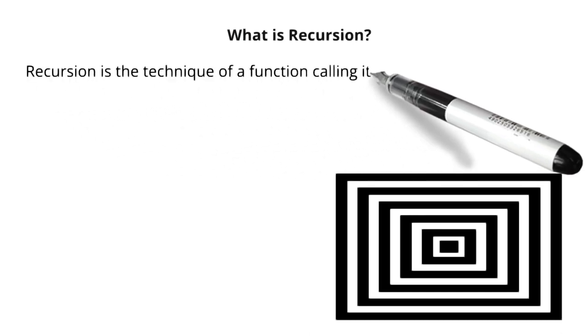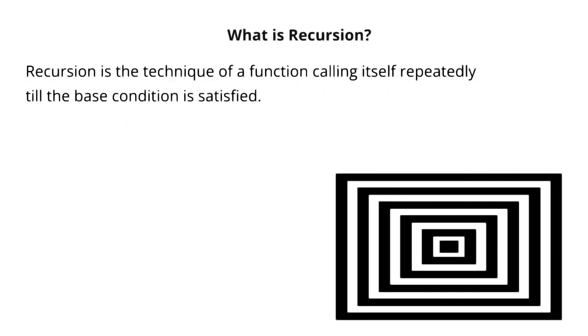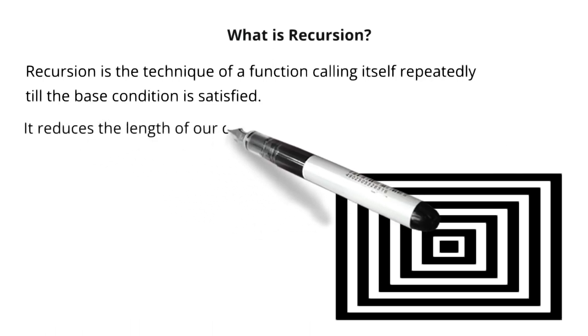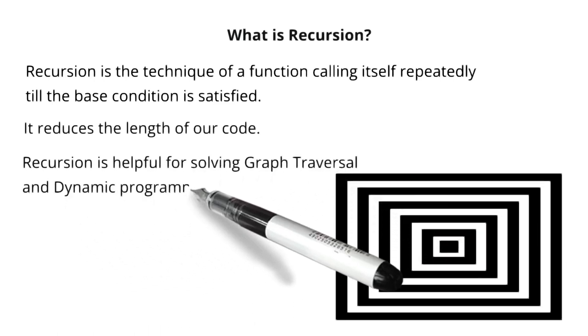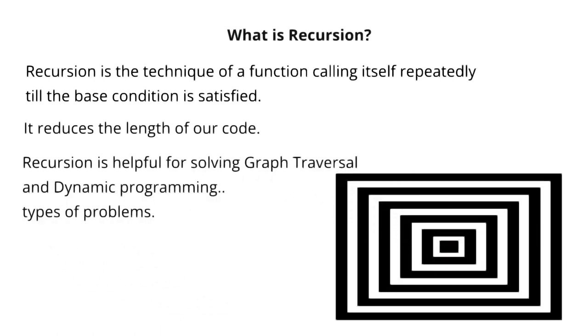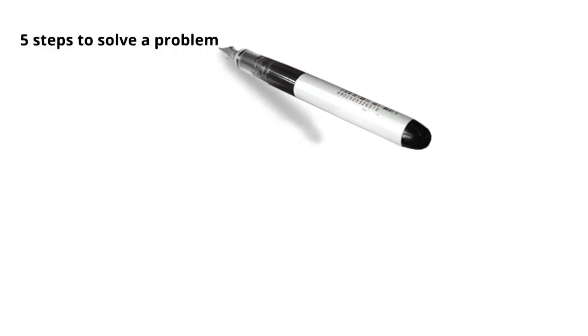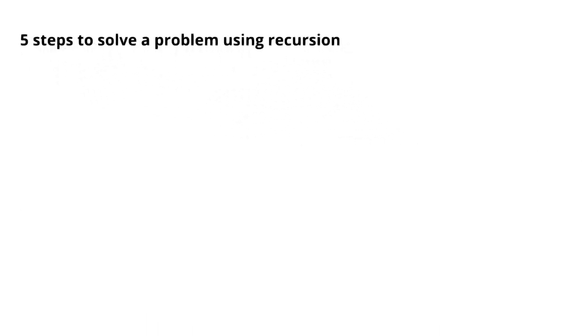Recursion is a technique of a function calling itself repeatedly till the base condition is satisfied. It reduces the length of our code. It is helpful for solving graph traversal and dynamic programming types of problems. 5 steps to solve a problem using recursion.